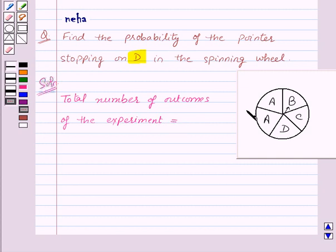Now the experiment is spinning the wheel. And the number of outcomes are 1, 2, 3, 4 and 5.